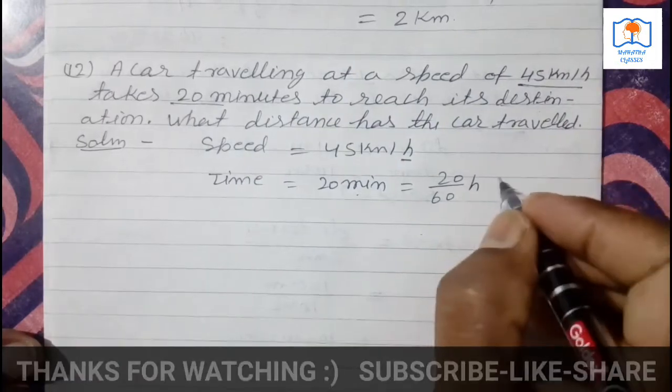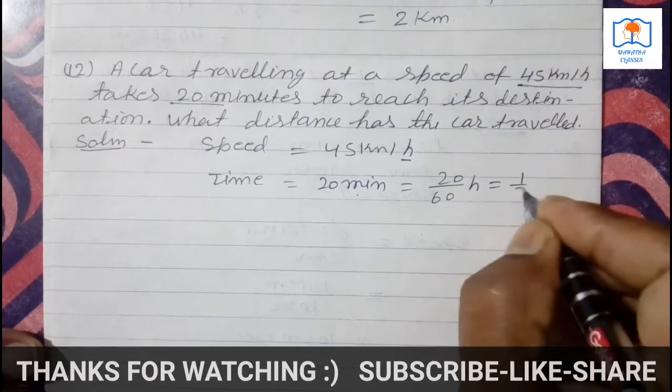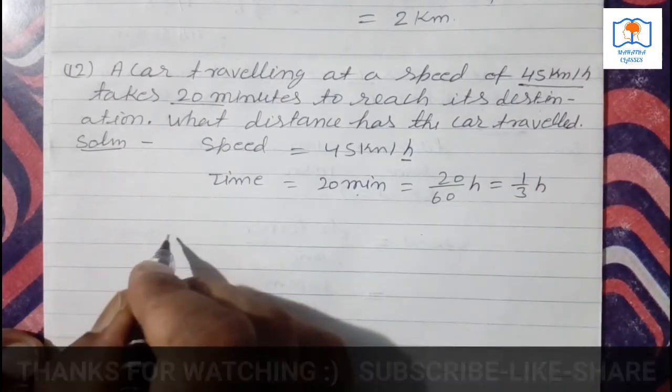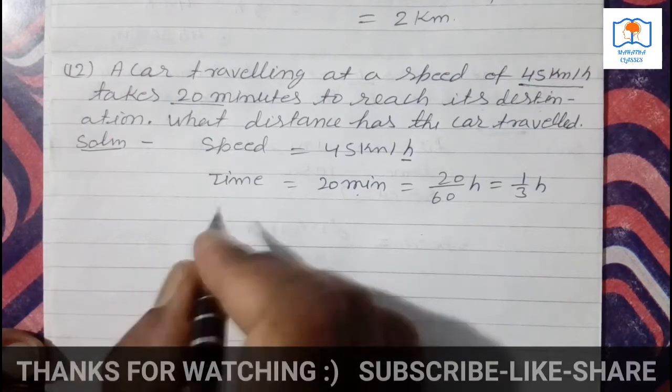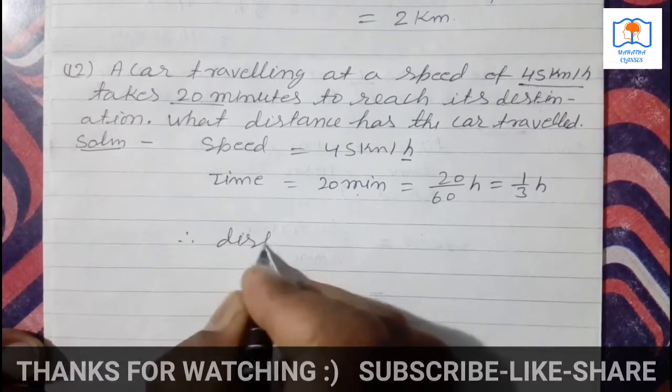Time is in hours in the speed unit, so convert. 20 minutes divided by 60 minutes equals 1 by 3 hours. Now what will you find? Distance. You must write the formula.